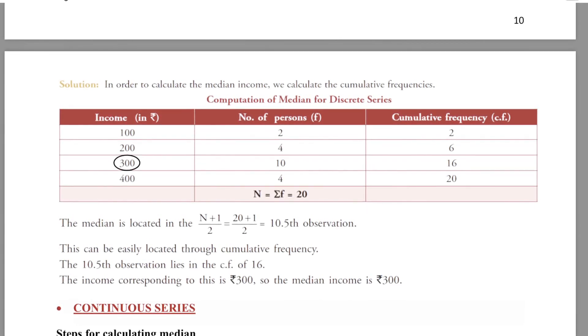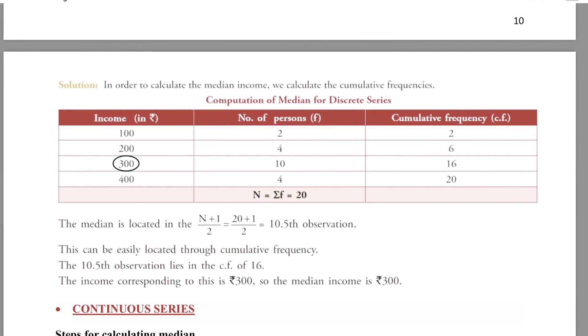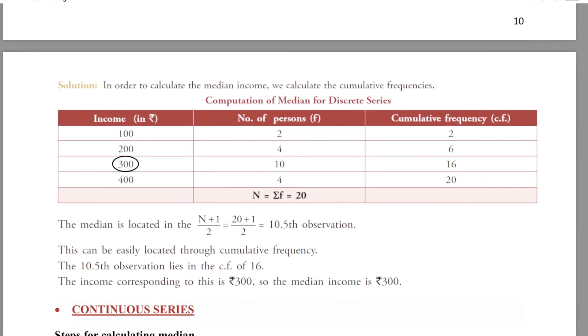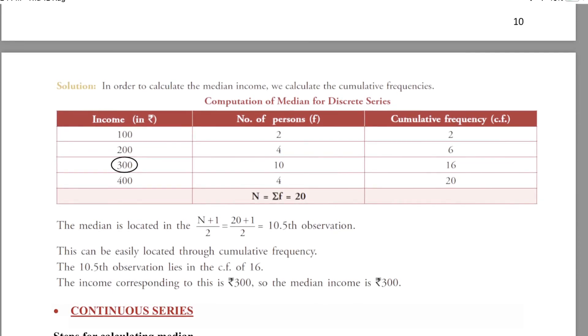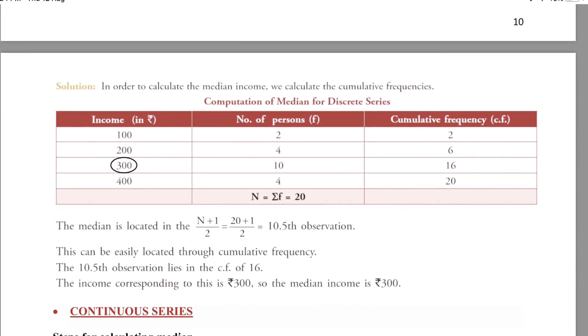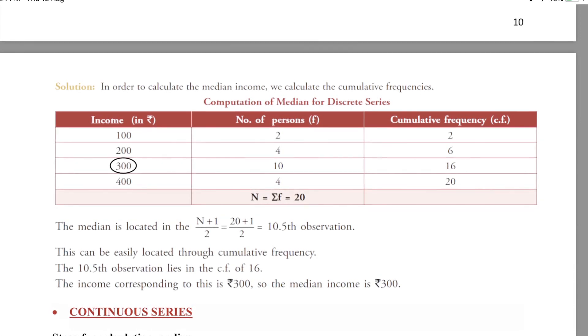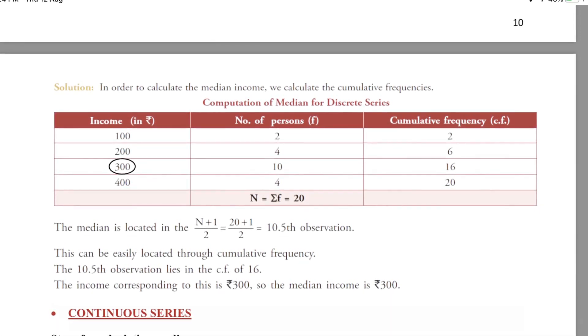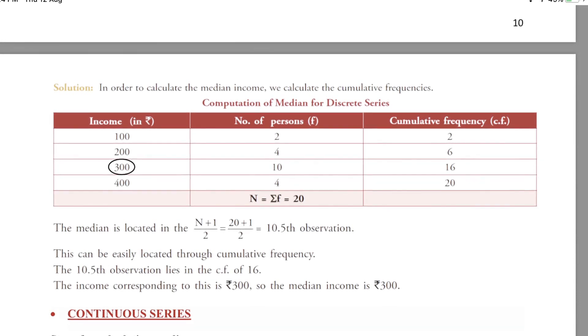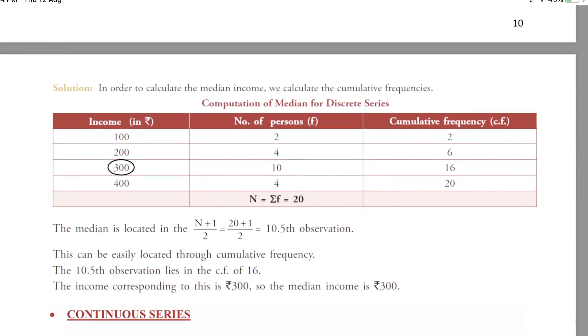For example, here it is 2. Next, 2 plus 4 is equal to 6. Again, 6 plus 10 is equal to 16. Then next, 16 plus 4 is equal to 20. We get the column of cumulative frequency.